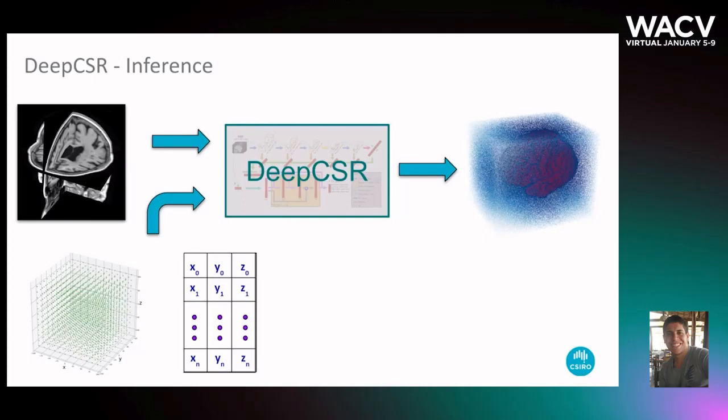Finally, with the predicted implicit surface representation at the desired resolution, we can run a topology correction algorithm and an iso-surface extraction method to reconstruct the target surface as a triangular mesh.